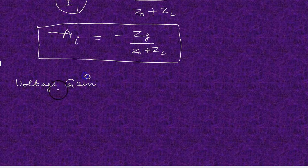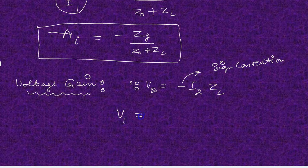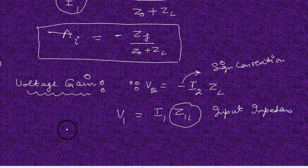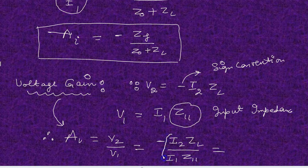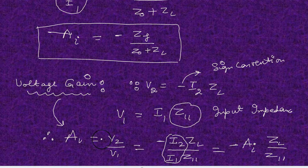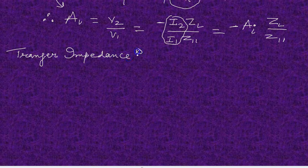Now we find the voltage gain using the Z parameters. The minus sign is because of the sign convention. V2 equals minus I2 times ZL, and V1 equals I1 times the input impedance, where the input impedance is Z parallel. So voltage gain becomes V2 over V1. Since I2 over I1 is the current gain, the voltage gain equals minus the current gain times the output (load) impedance divided by the input impedance.